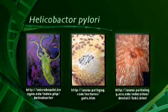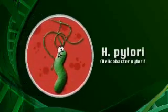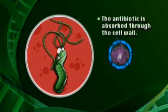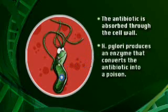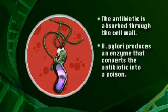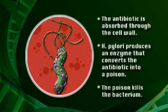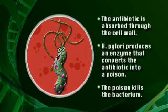Any of you who have ulcers know this is not a fun thing to have. So what's really going on? With the normal version of Helicobacter pylori, when the individual takes antibiotics, the antibiotic is absorbed through the cell wall and interacts with an enzyme that converts the antibiotic into a poison — and that's how this one works. That kills the bacterium, which is what you want, and then the person is able to get rid of the ulcer.